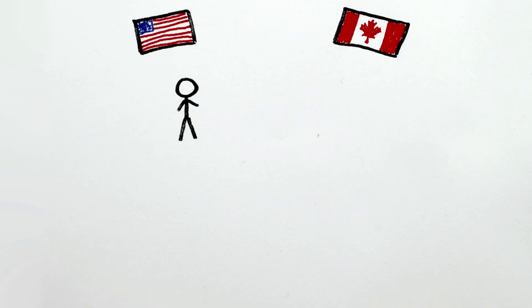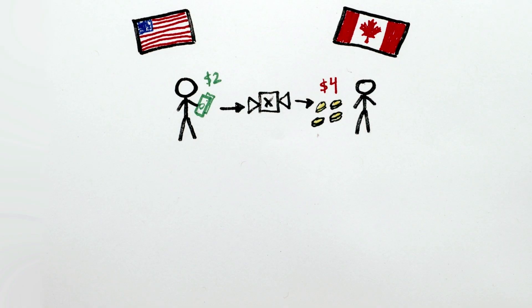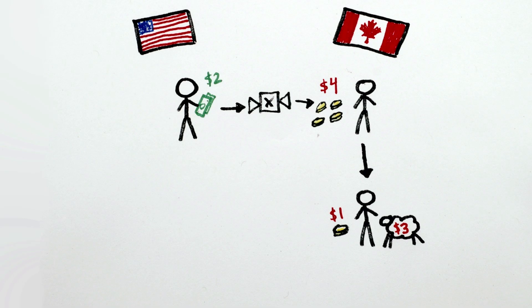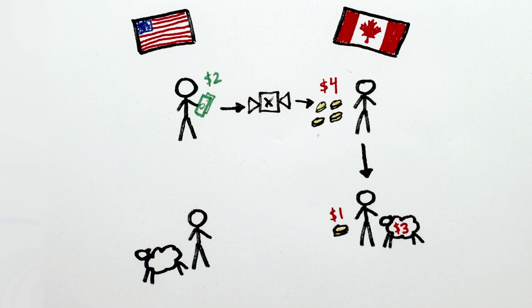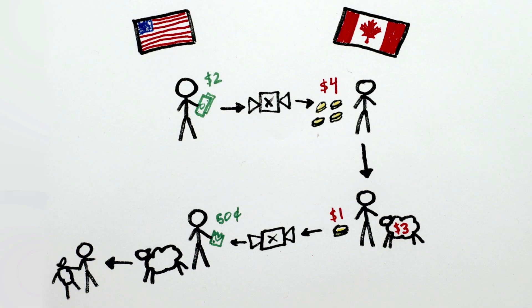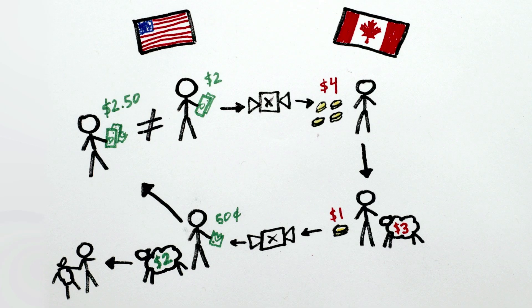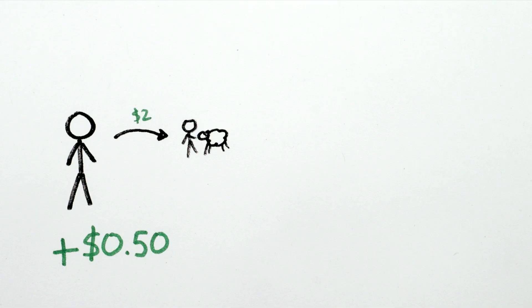Which of course means I can go to Canada, convert my 2 US dollars to 4 Canadian dollars, spend 3 of them on the sheep, and come back to the US with my sheep, plus 1 Canadian dollar, which converts to 50 US cents. If I then sell the sheep back to someone in the US for the $2 it's worth, I'll now have $2.50 instead of $2. So I made money just by buying and selling a sheep.